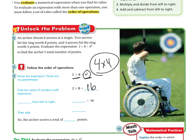Next, multiply and divide from left to right. I don't have any division, but I do have multiplication. So 2 times 8 is 16. The next step is addition and subtraction: 16 plus 16 is 32. So the archer scores 32 points.